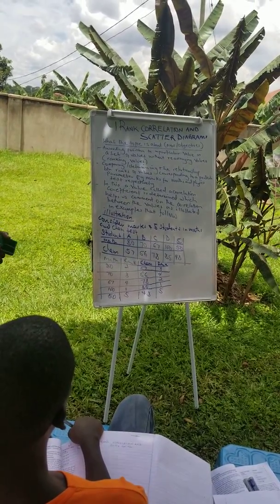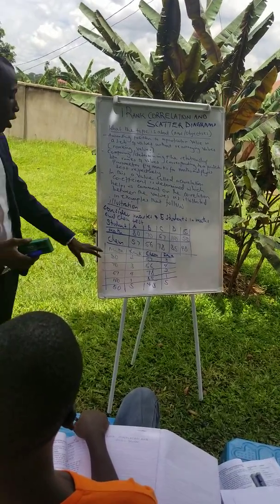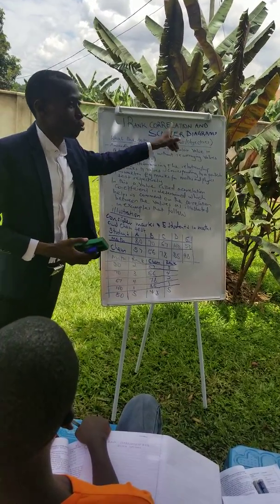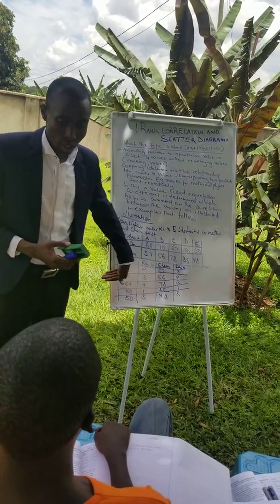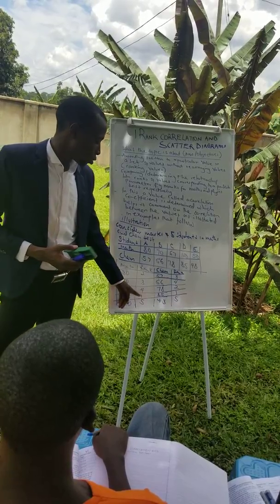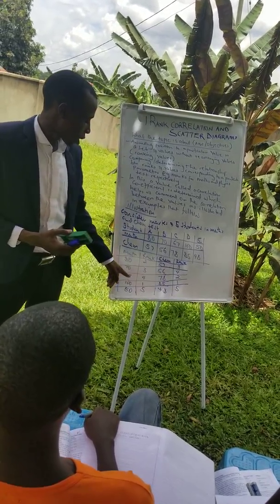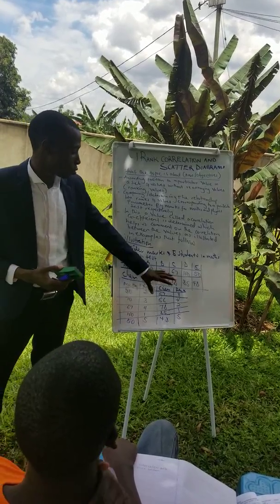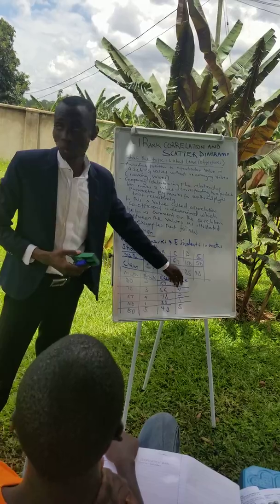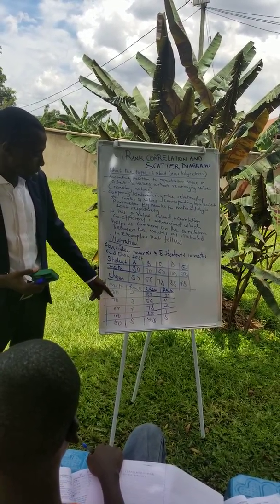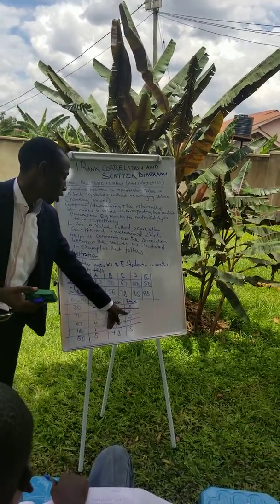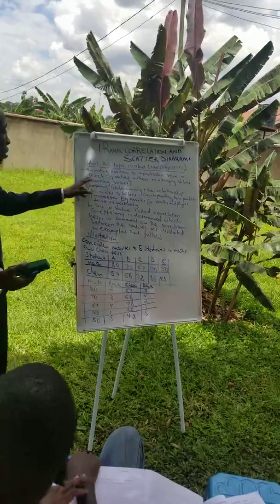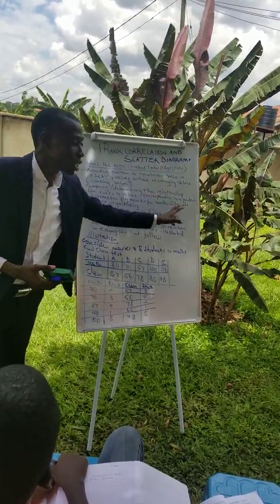So that is what ranking is all about. When you are given values like marks, that is what you want to do. Now after ranking, this topic goes ahead and tells you to determine the relationship — how are these ranks similar? It is not a guarantee that number 1 here is still number 1 here. Number 3 in math becomes number 4 in chemistry. So the relationship is not always the same.